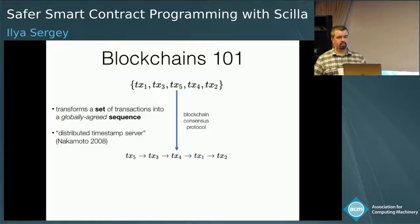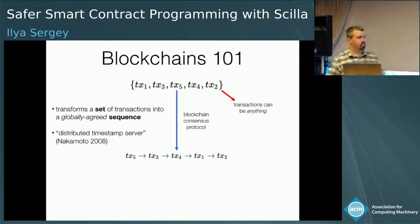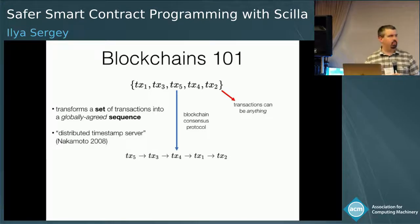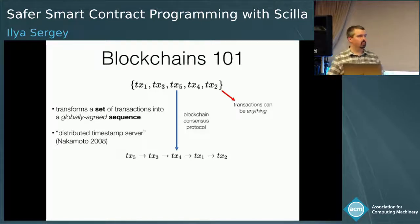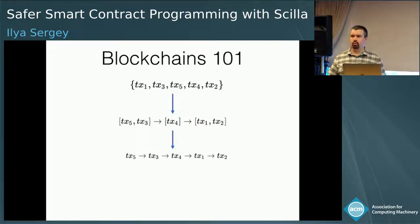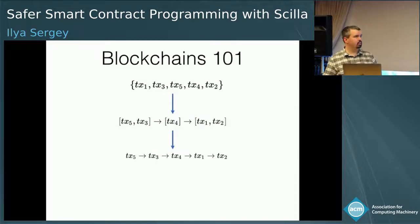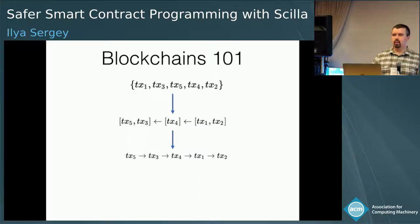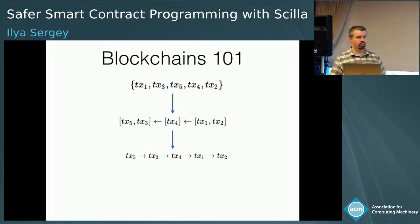Those elements referred to as transactions can be literally anything. In practice, these multiple parties don't exactly agree on where each particular transaction comes in the set. Instead, they agree on an order of packages of these transactions, known as blocks. Blocks are actually ordered backwards. The blockchain consensus protocol allows parties to agree on the order of blocks, and since blocks contain transactions, that also allows agreeing on the order of transactions.